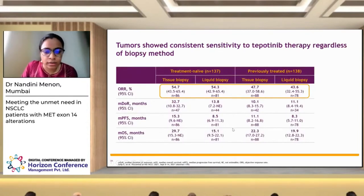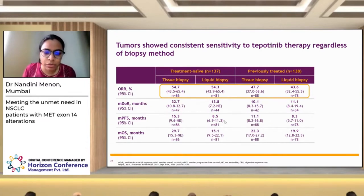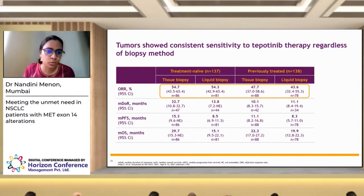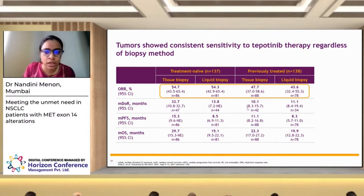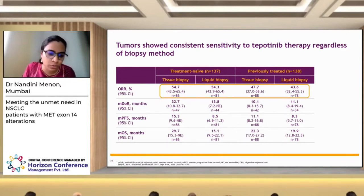Tepotinib demonstrated consistent sensitivity regardless of the method of detection — whether MET exon 14 skip mutations were detected in liquid biopsy or solid tumor tissue, there was a response. In treatment-naive patients, ORR was approximately 54% on both tissue and liquid biopsy, and 47% and 43% respectively in previously treated patients. Median PFS in the treatment-naive group was 15 and 11 months on tissue and 8.5 months on liquid biopsy. This confirms that liquid biopsy is an acceptable alternative when tissue is unavailable.